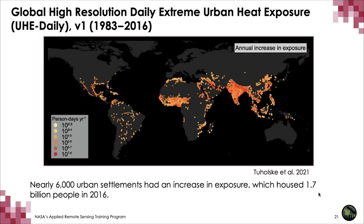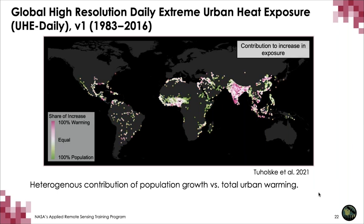European cities don't tend to be increasing in population, but they are warming. For much of the rest of the planet, it's a combination of both population change and increased warming. We can disaggregate this dataset for every city. We find that 6,000 urban settlements had an increase in exposure, representing 1.7 billion people in 2016. Cities with the greatest increase in person-days really concentrate at the mid and low latitudes.